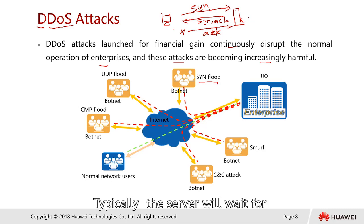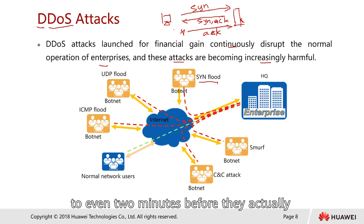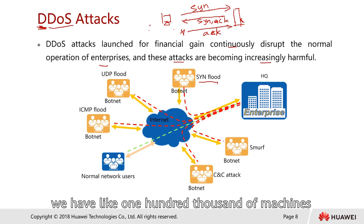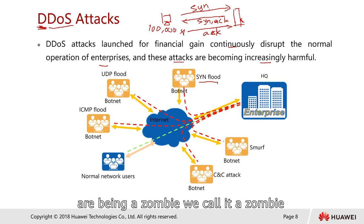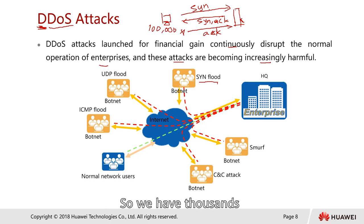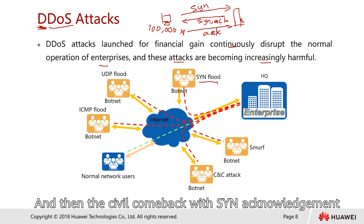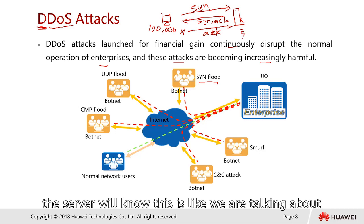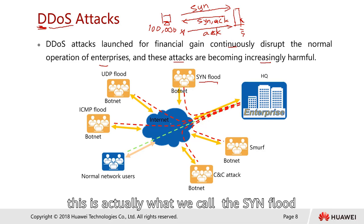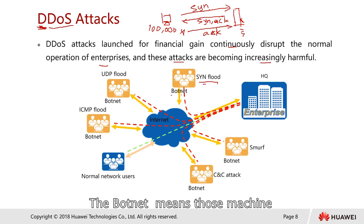Typically the server waits tens of seconds to two minutes before closing the session. But in a Distributed DoS attack, if we have 100,000 machines acting as zombies — like in a zombie movie — all launching this SYN flood simultaneously, the server replies with SYN-ACK to each but never receives the final ACK. With hundreds of thousands or millions of such sessions, this can bring down the server. This is the SYN flood attack, using a botnet of zombie machines.